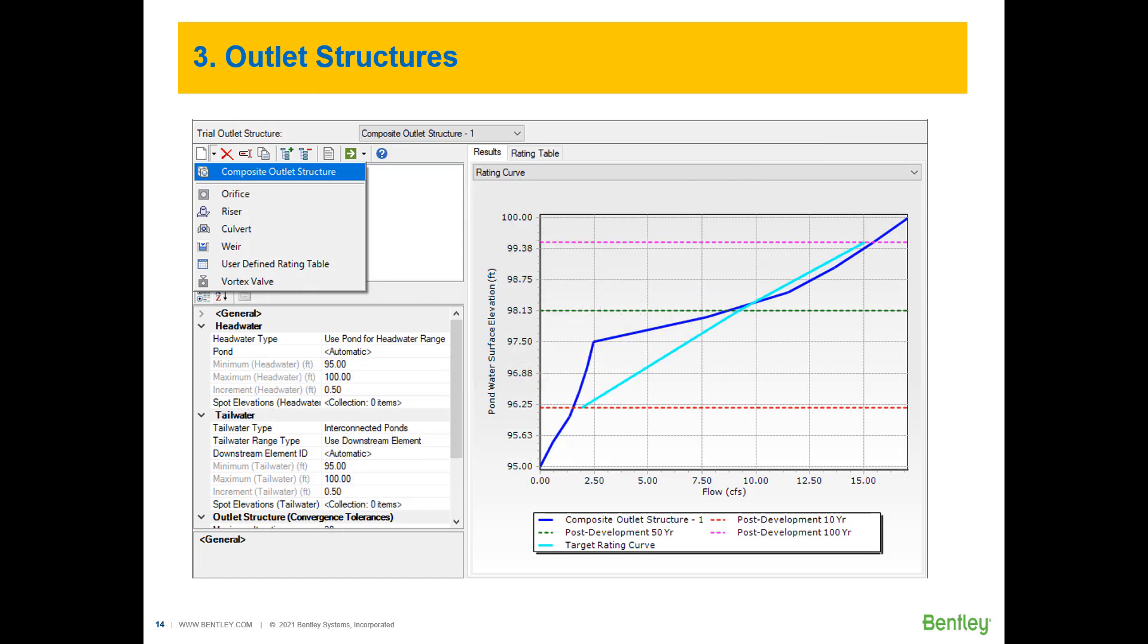Now that we know the purpose of an outlet structure let's get into the hydraulics of designing one. This is where you can expect to spend a decent amount of time designing. First of all an outlet structure must be connected to a single pond upstream and then downstream an outlet structure can discharge to a free outfall or it could be connected to another pond where flow can go in forward and reverse directions. As we saw in the previous slides, outlet structures can be any combination of orifices, risers, culverts, weirs, vortex valves, etc. It is up to you to determine which of these elements you will include in your outlet structure.